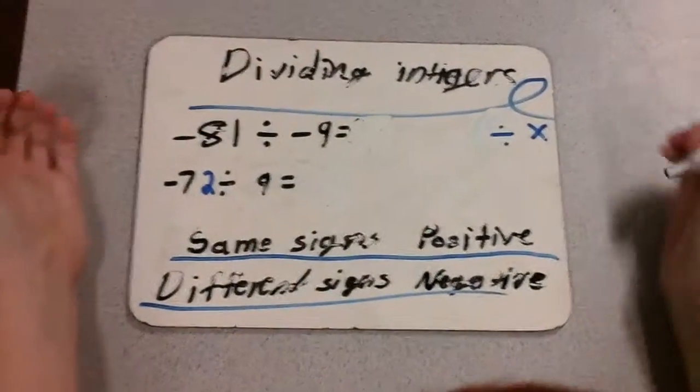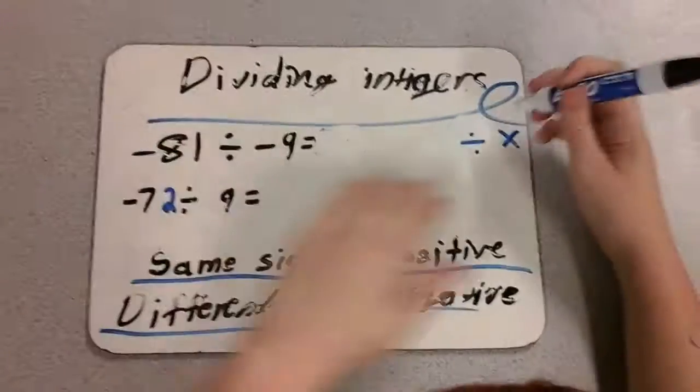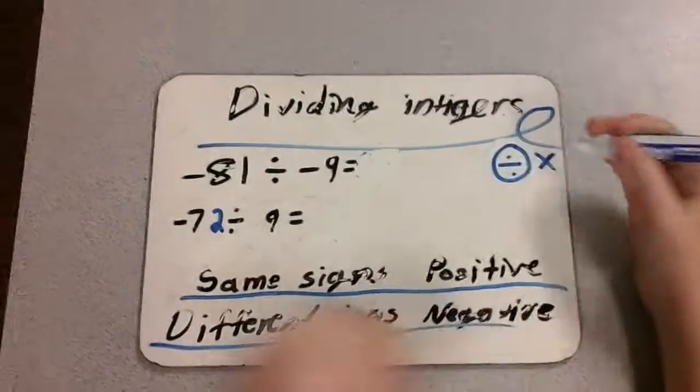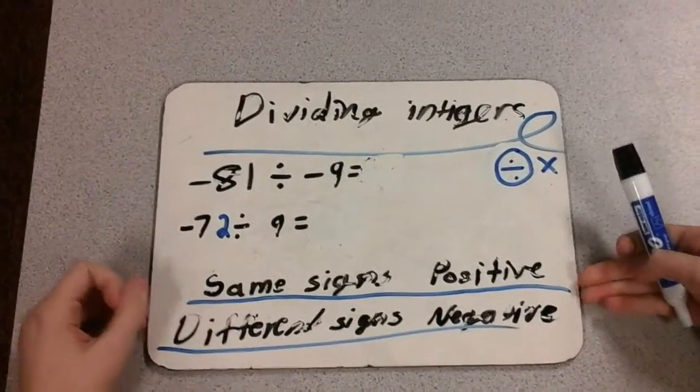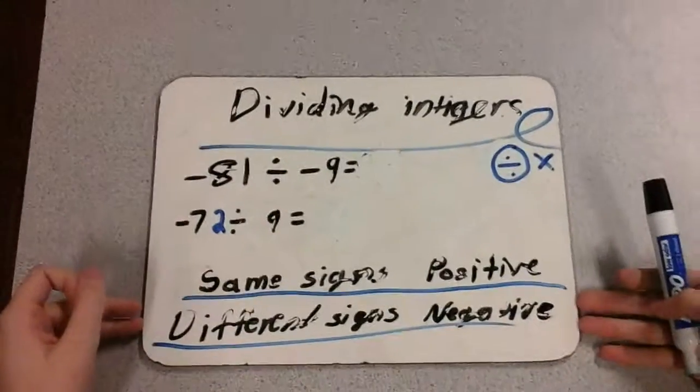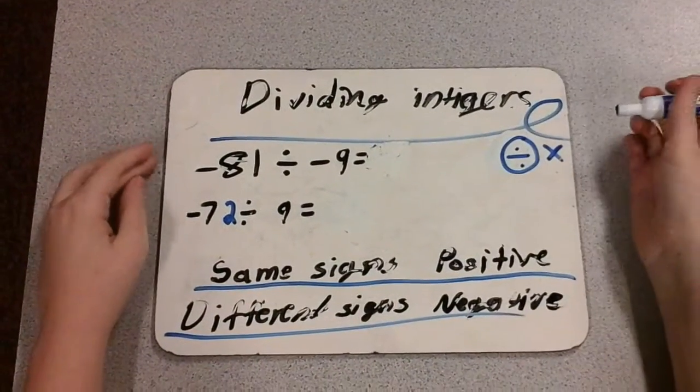Welcome back for the final time. Today, we're dividing integers. If it's the same sign, it's positive. If it's different, it's negative. Same rules as multiplication.